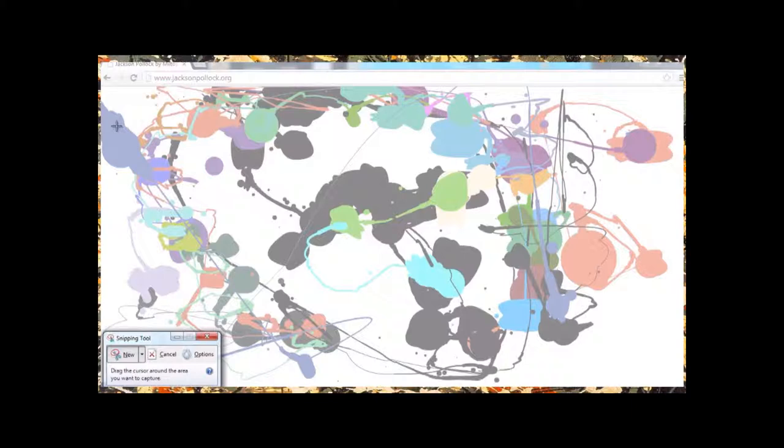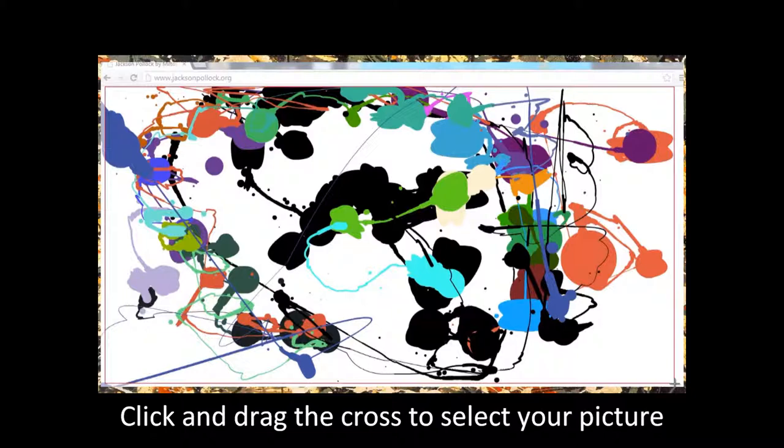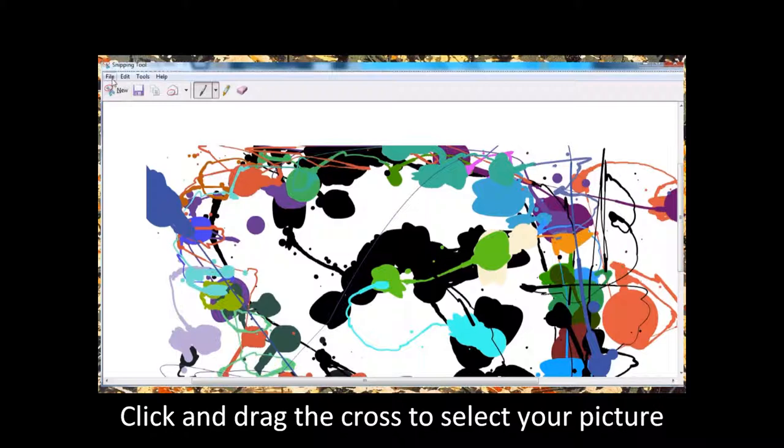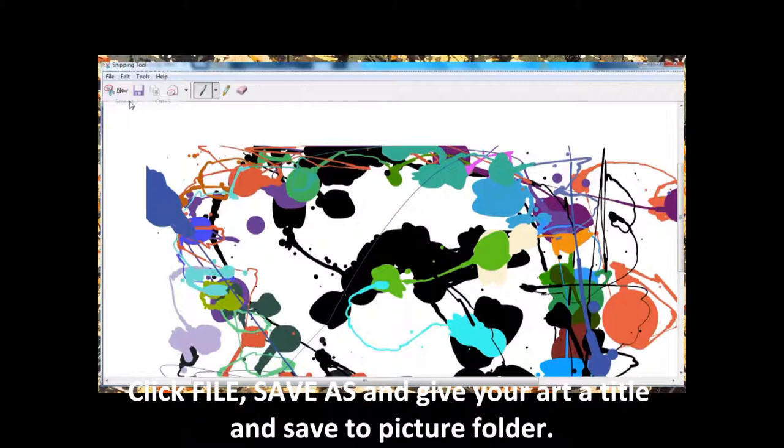Once you click on the snipping tool, you'll have a little cross and at the bottom it says new. And basically, you're going to click and drag on the T shape. And then, once you let go, it will save that picture for you. And you're going to click file, save as, and give it a name.